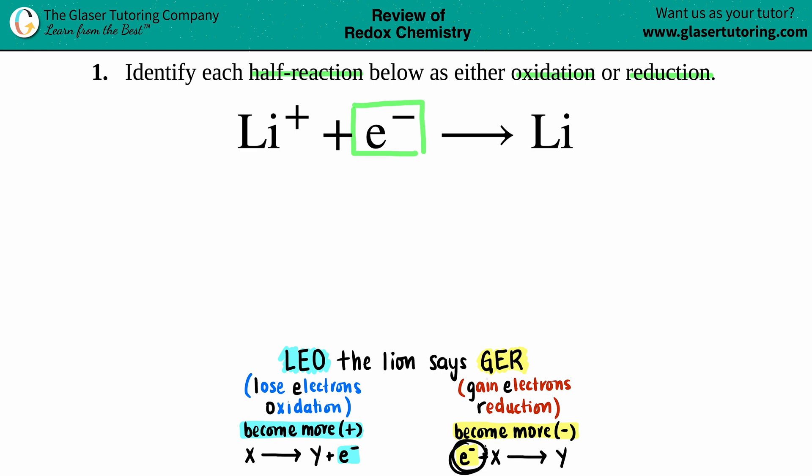When your electrons are on your reactant side, as in this little equation here, that's always going to be reduction. On the flip side, if you did see your electrons on the other side, that's always oxidation. So here, since your electrons are on your reactant side, this is reduction.